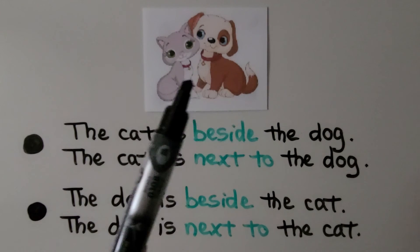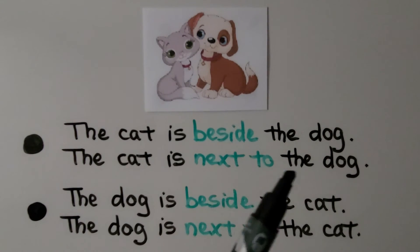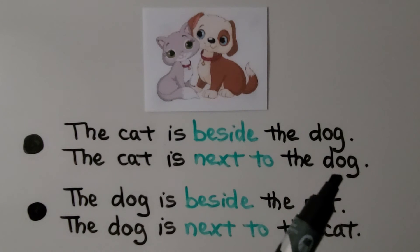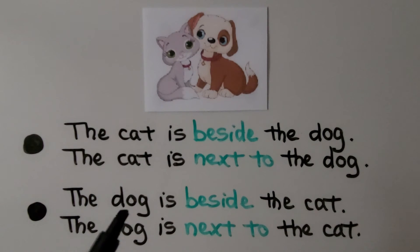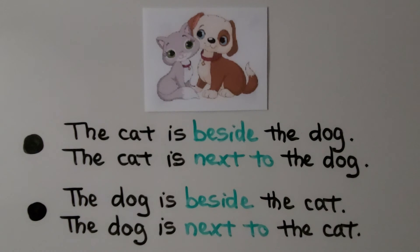Here is a picture of a cat and a dog. The cat is beside the dog. The cat is next to the dog. The dog is beside the cat. The dog is next to the cat. The cat and dog are by the side of each other. Beside and next to means by the side of.